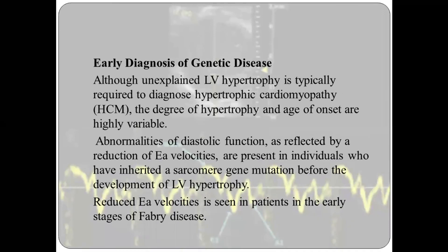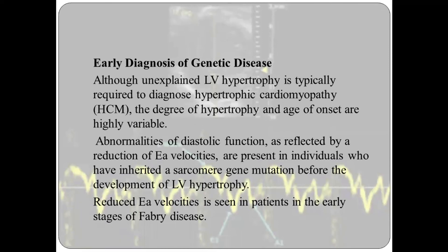Another application is in the early diagnosis of genetic disease. Although unexplained LV hypertrophy is typically required to diagnose HCM, the degree of hypertrophy and age of onset is highly variable. Abnormalities of LV diastolic function, represented by a reduction in E' velocities, are present in individuals who have inherited a sarcomere gene mutation before the development of LV hypertrophy, allowing earlier diagnosis. Reduced E' velocities are also seen in early stages of Fabry's disease.